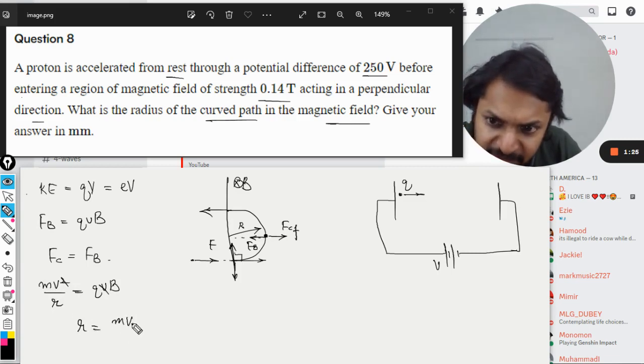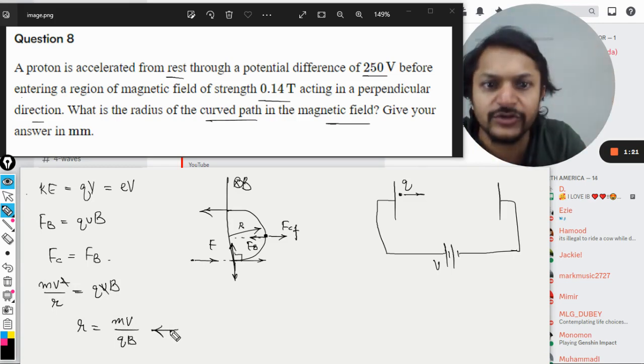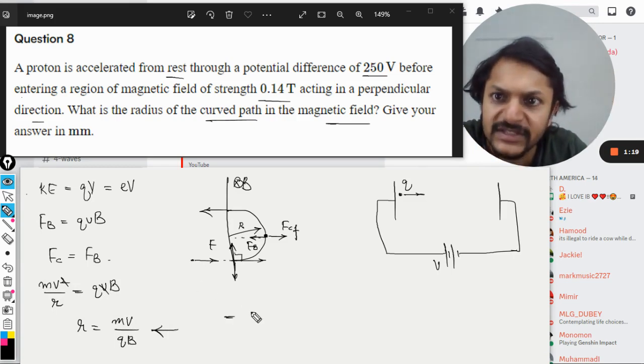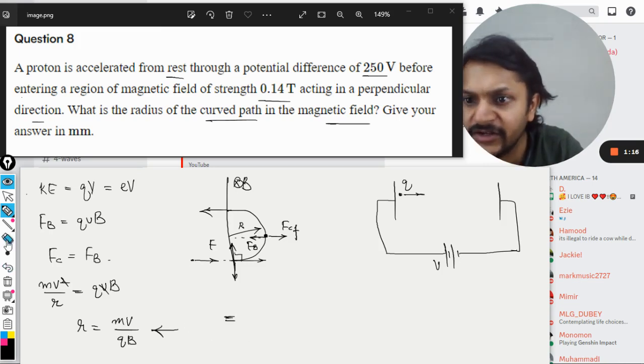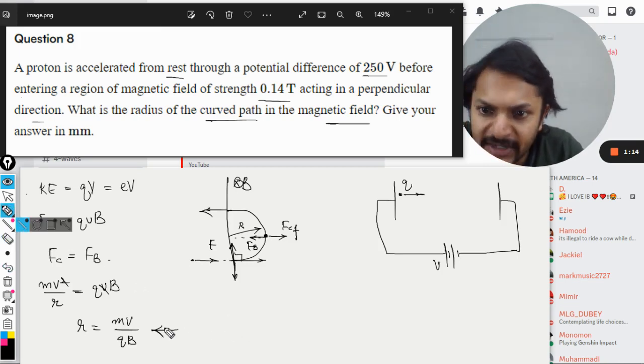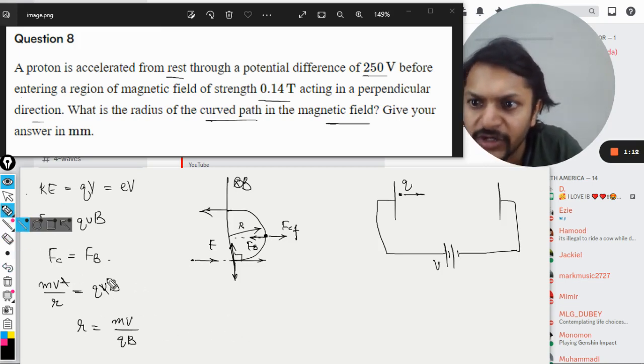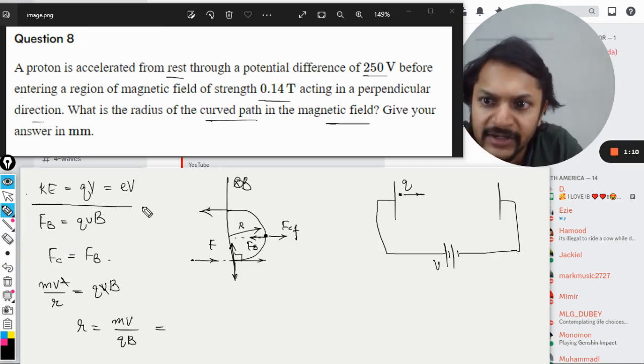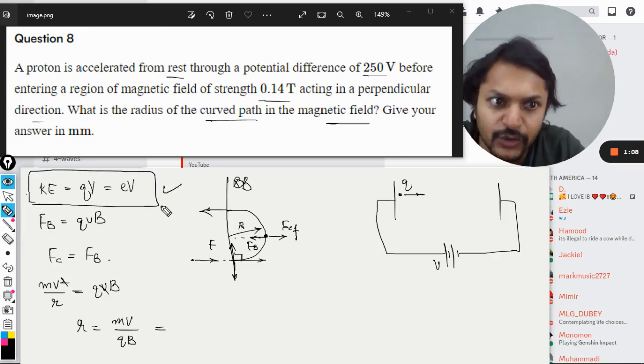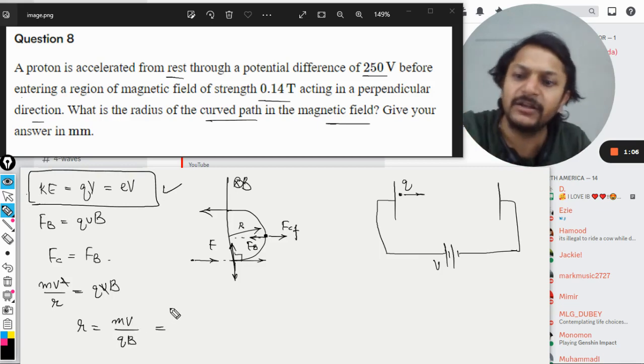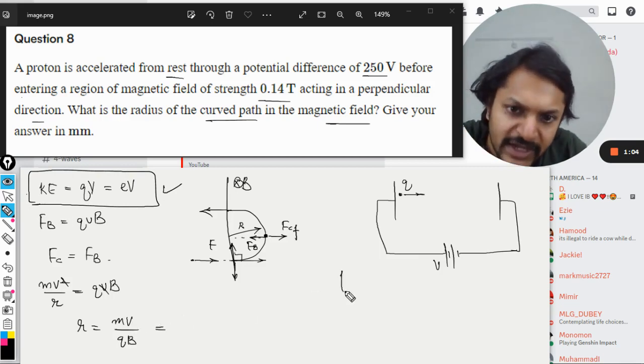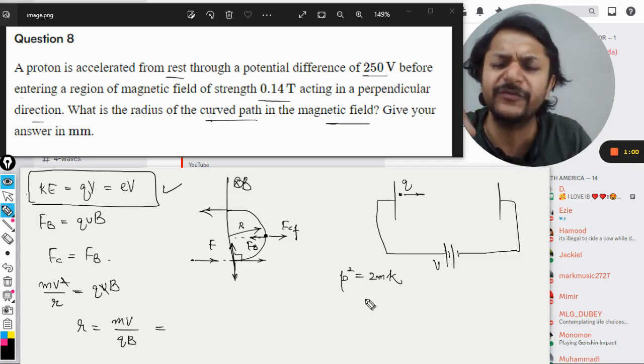We're just going to substitute the values. This is the momentum and we only know the kinetic energy, not the momentum. That becomes the first part of the question: we have to convert this momentum into kinetic energy. We know that p² equals 2mK, a very famous formula from mechanics.